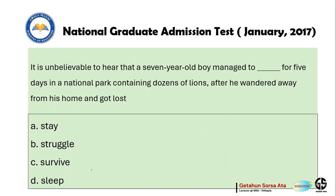The next question: it is unbelievable to hear that a seven-year-old boy managed to ___ for five days in a national park containing dozens of lions after he wandered away from his home and got lost. Options: a) stay, b) struggle, c) survive, d) sleep.